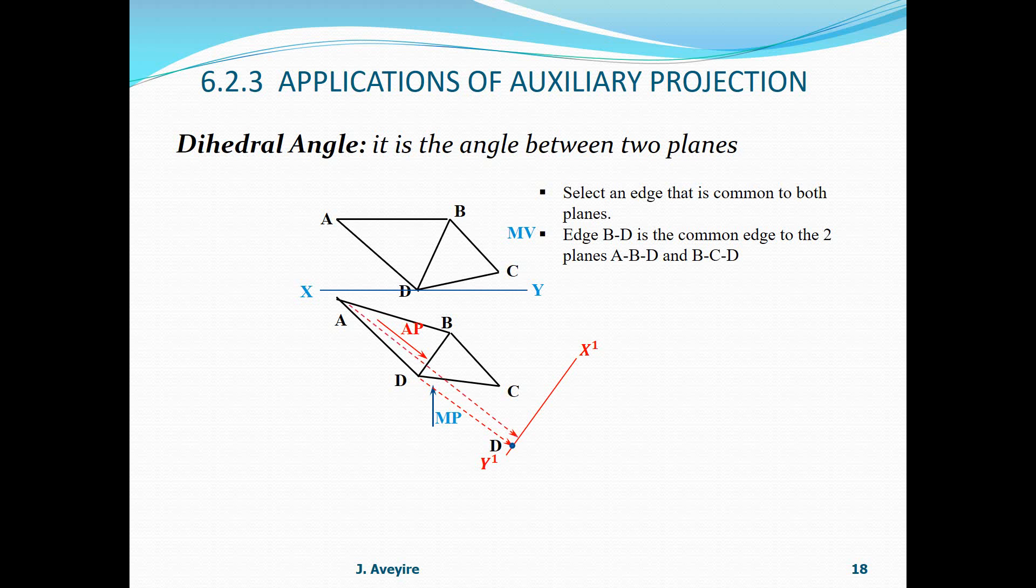Then, the next point is A. Projecting the point A through A. We go in to pick the distance from XY on the mutual view. That is a positive distance, the perpendicular distance. Therefore, we enter the positive perpendicular distance.